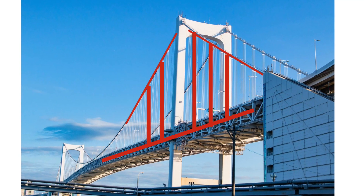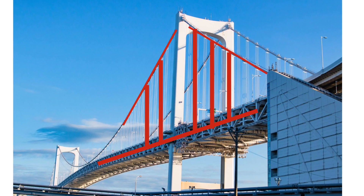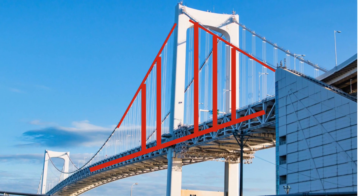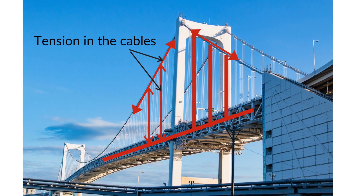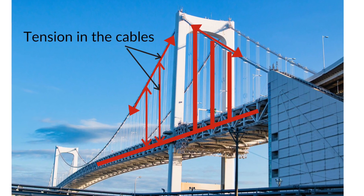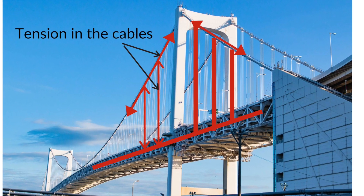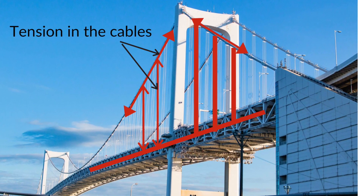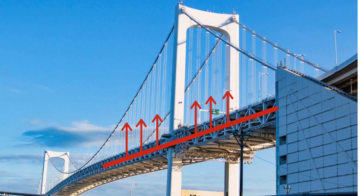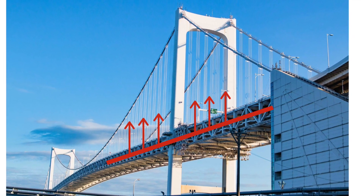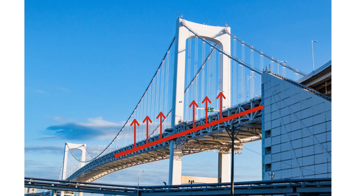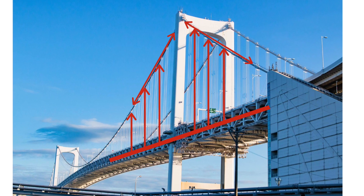The deck hangs on the vertical suspenders, which are connected to the main cables. The main cables are anchored at the ends and pass over the two large towers. Since cables can only carry tensile force, all cables — including the main cables and suspenders — are in tension, while the towers are in compression.